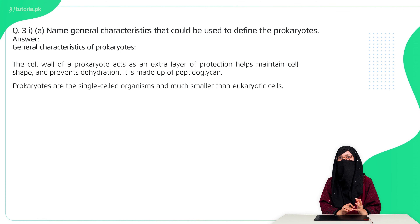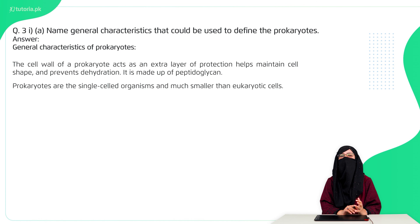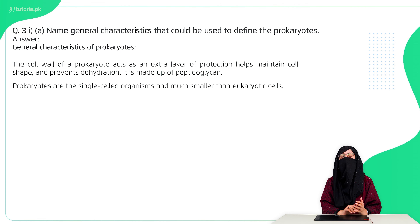Number one: there are no membrane-bound organelles. Number two: the cell wall is created from murein or peptidoglycans. Number three: it is mostly a unicellular organism.